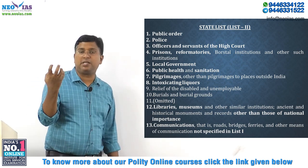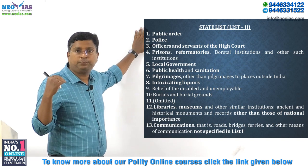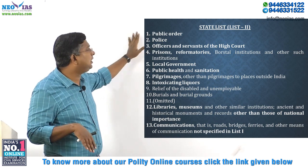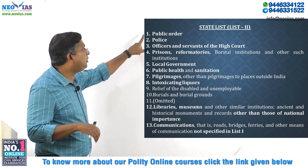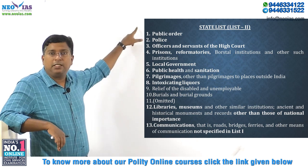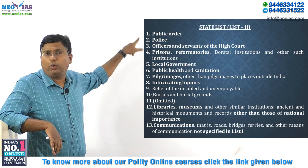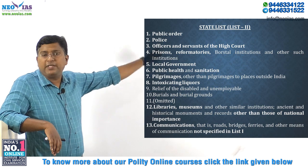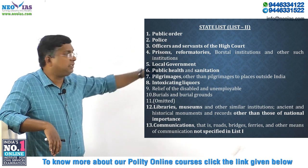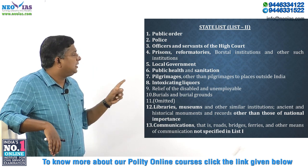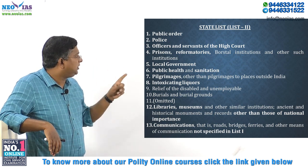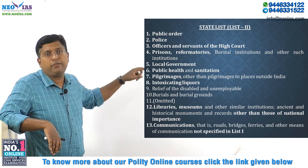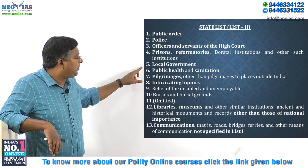The State List currently has 59 subjects. The subjects include: public order and police — these are commonly in the news and come under the State List. Officers and servants of the High Court come under the State List. Prisons, reformatories, borstal institutions and similar institutions come under the State List. Local government is a very important subject under the State List.